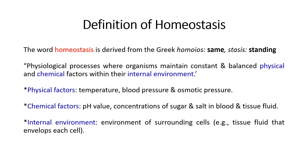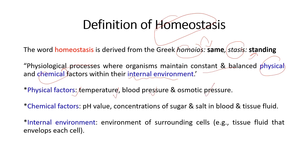Homeostasis comes from the Greek words: 'homeo,' meaning same, and 'stasis,' meaning standing. Homeostasis is defined as the physiological process where organisms maintain constant and balanced physical and chemical factors within their internal environment. Physical factors include temperature, blood pressure, and osmotic pressure. Chemical factors include pH value, concentration of sugar and salt in blood, and tissue fluid. The internal environment refers to the environment surrounding cells, such as the tissue fluid that envelops each cell.